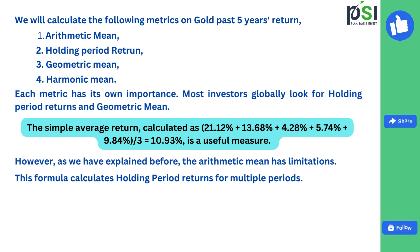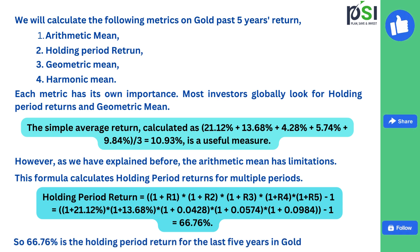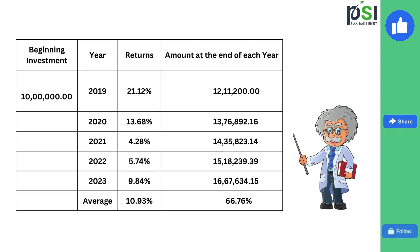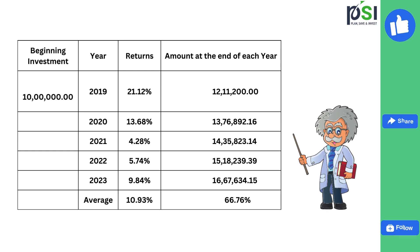Taking the gold data for 5 years and calculating using this formula, the holding period return — the total return — is equal to 66.76% for the last 5 years of gold investment. To evaluate this, you can calculate the amount at the end of each year. If Rs 10 lakhs is invested and in 2019 the return is 21.12%, the end-of-year value would be Rs 12,11,200. Manually calculating through each year confirms the value equals 66.76%, matching the formula.